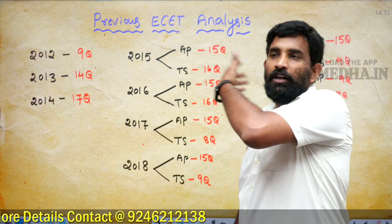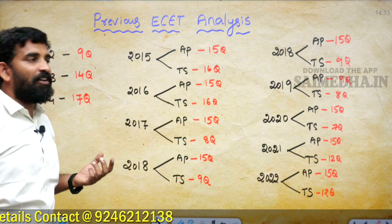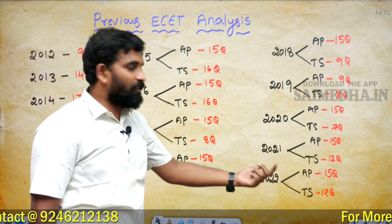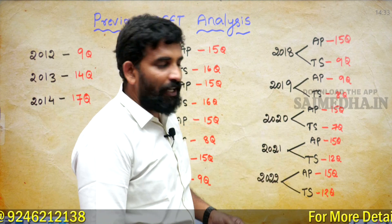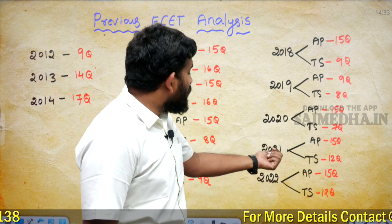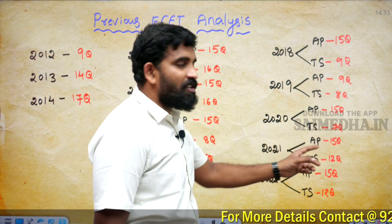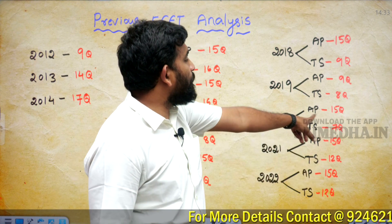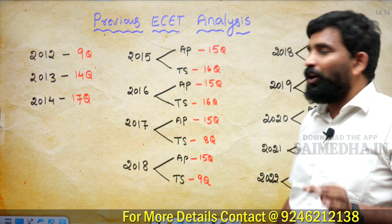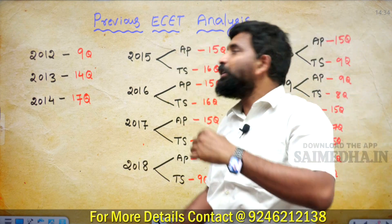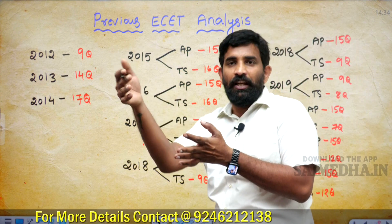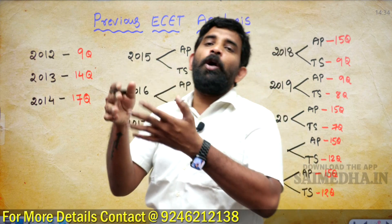If you see this from the weightage point of view, looking at the last two to three years of previous papers at AP level, there are 15 questions. At TS level in 2021, AP level had 15 questions and Telangana level had 12 questions. In 2020, AP level had around 15 questions and Telangana State had 7 questions. So on average, you can expect a compulsory 10 marks average score from this subject.